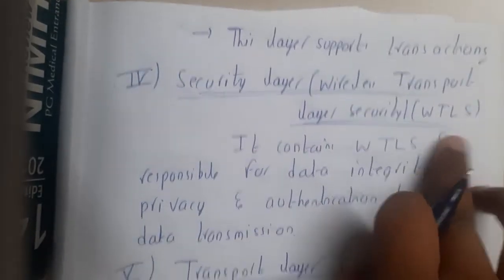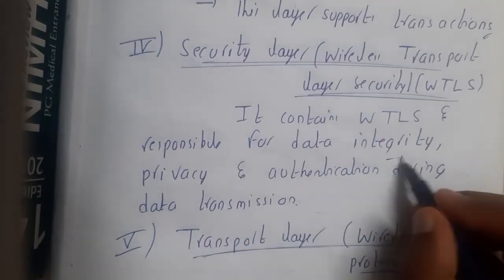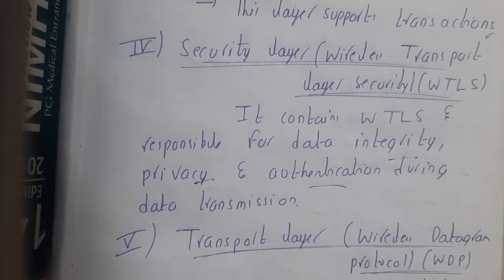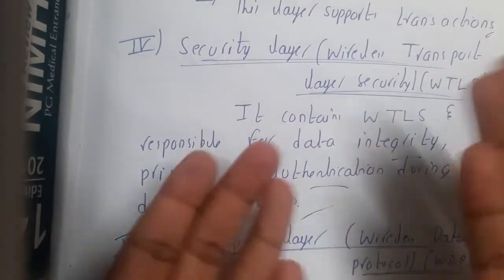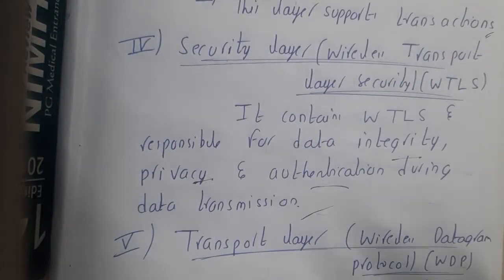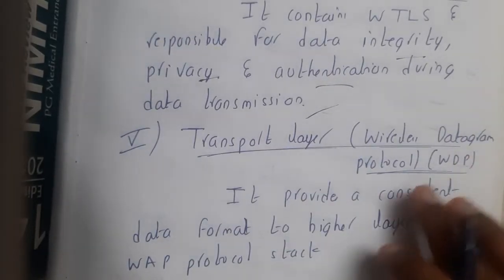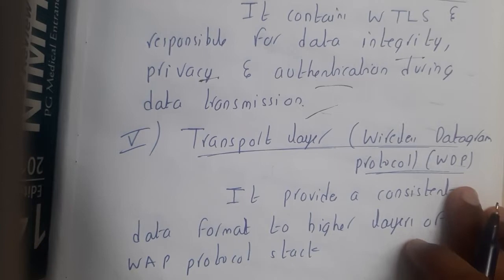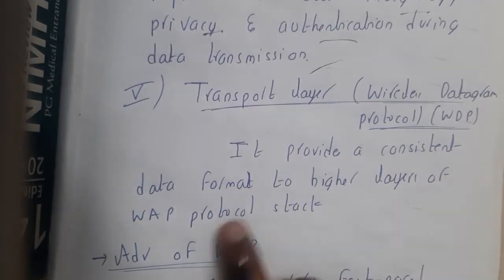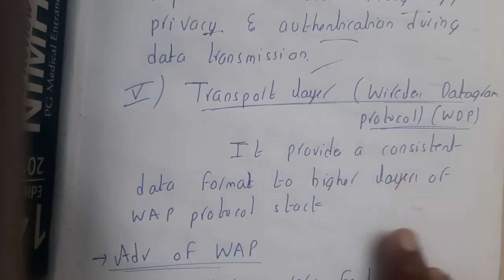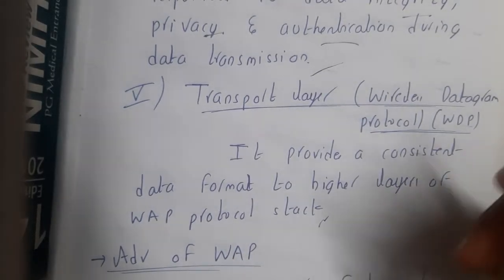The security layer uses WTLS — Wireless Transport Layer Security. It is responsible for data integrity, privacy, and authentication during data transmission, providing security for transmitted data. The transport layer uses WDP — Wireless Datagram Protocol — which provides a consistent data format to the higher layers of the WAP protocol stack.